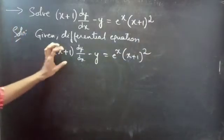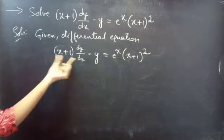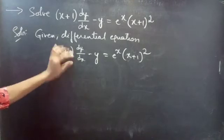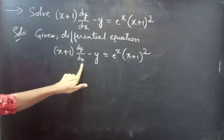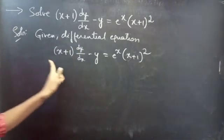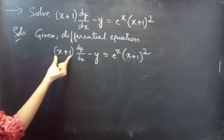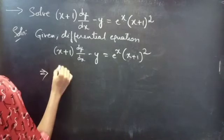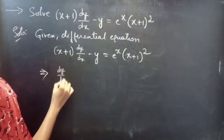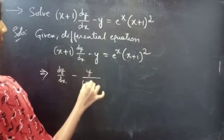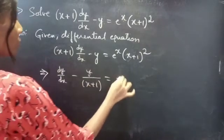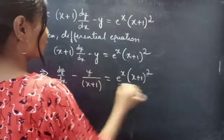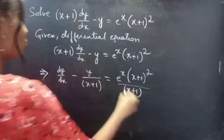If you notice, the coefficient of dy/dx is (x + 1). Since we need to make the coefficient of dy/dx equal to 1, we will divide the whole equation by (x + 1). Then: dy/dx − y/(x + 1) = e^x (x + 1)² / (x + 1).